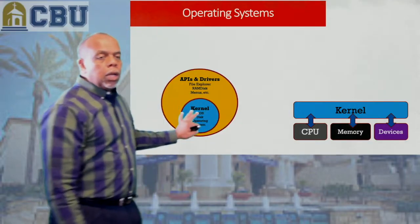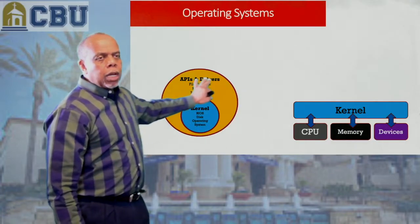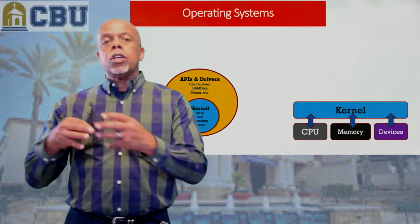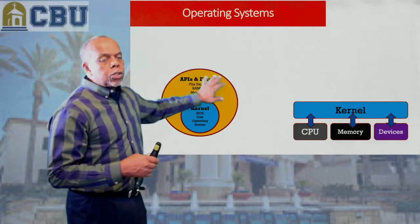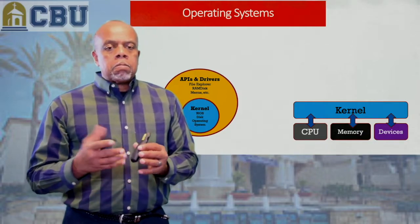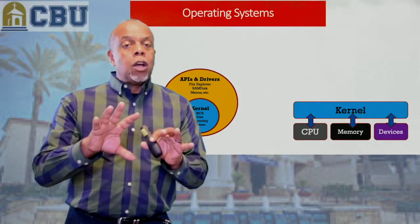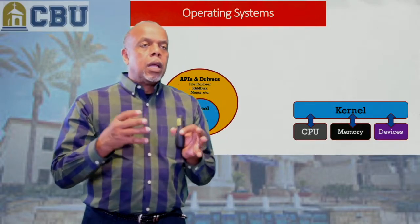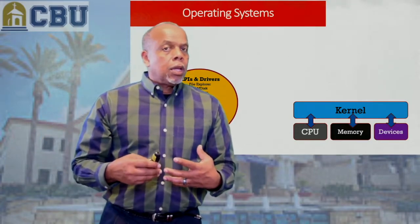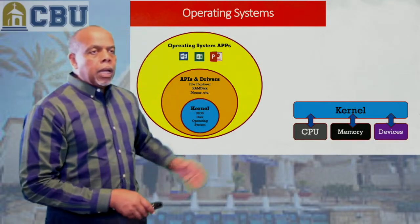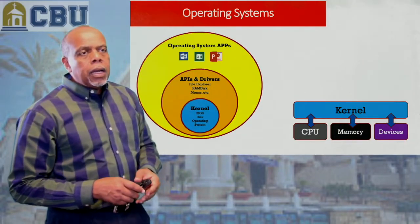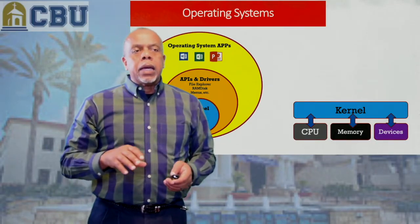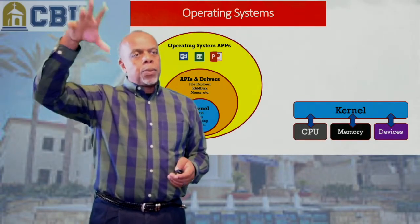The next layer on top of that kernel is where we have our operating system applications. Please don't confuse operating system applications with user applications. At this layer we have things like File Explorer, your menus, all the things in Windows — the menu layout, all accessories, your command prompt — all of those things are what we call operating system applications. Then outside of that, we have user applications like Word, Excel, PowerPoint. Those are the different layers that make up your operating system and the user applications that fit on top.